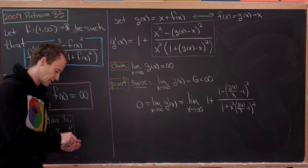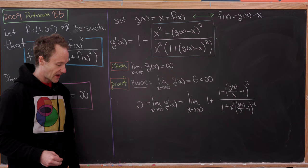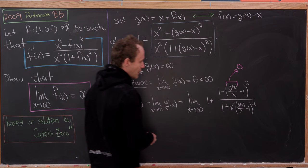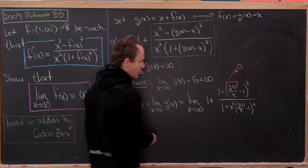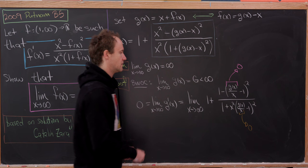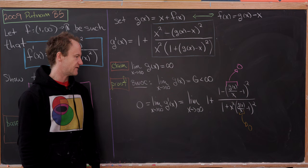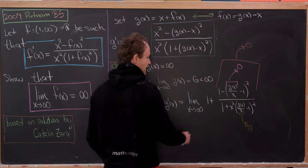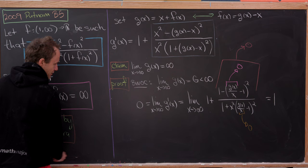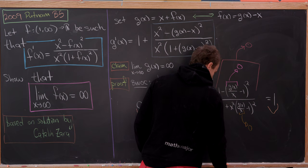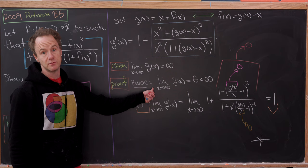Since the limit of g(x) is finite and x → ∞, g(x)/x → 0. So the numerator approaches 1 − 1 = 0, but with the denominator approaching infinity, that whole bracketed term approaches zero. That means the limit of g prime equals 1 plus 0, which equals 1. But we said the limit of g prime is zero, so we've derived 0 = 1 — a contradiction. Therefore the limit of g(x) must be infinite.